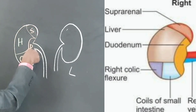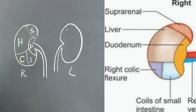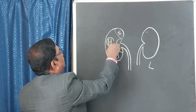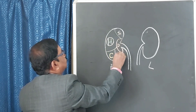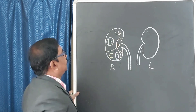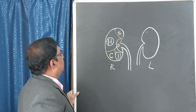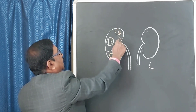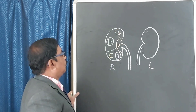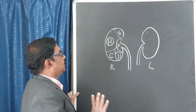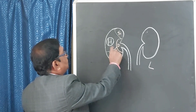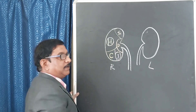Of these five important viscera, the hepatic and jejunal impressions are covered by peritoneum, so these two are peritoneal. The suprarenal, duodenum, and right colic flexure — these three are non-peritoneal, and the other two are peritoneal on the redder side.